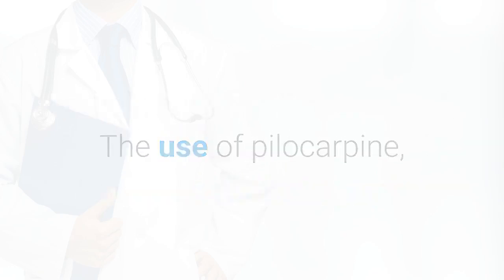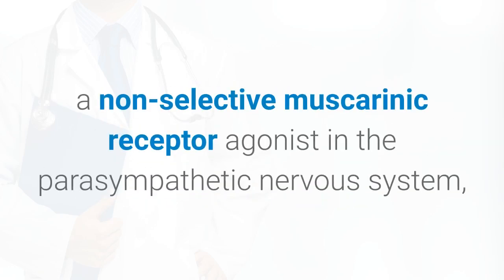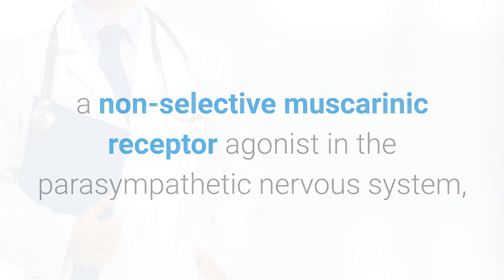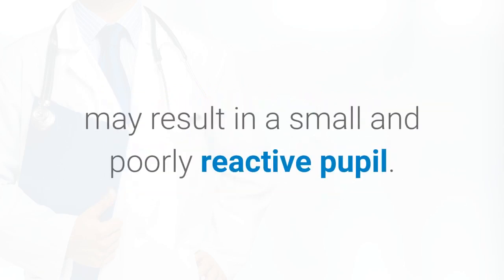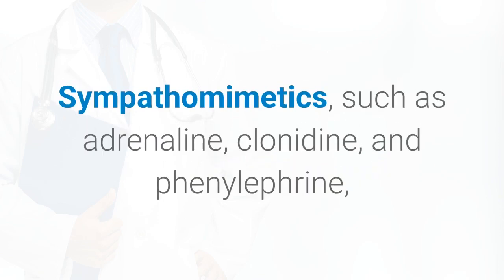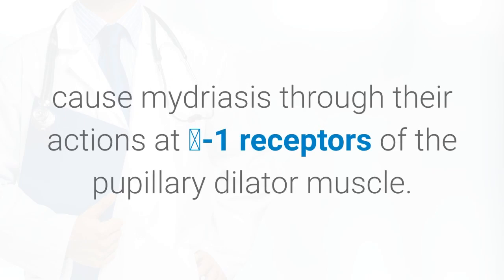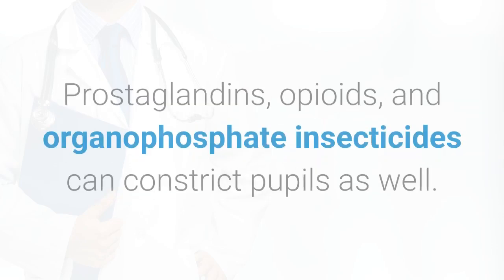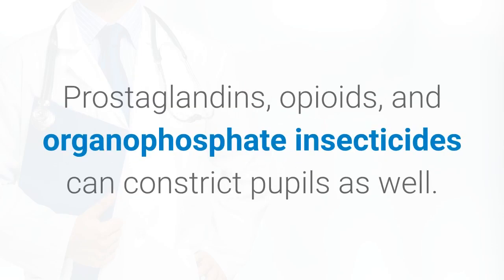The use of pilocarpine, a non-selective muscarinic receptor agonist in the parasympathetic nervous system, may result in a small and poorly reactive pupil. Some sympathomimetics such as adrenaline, clonidine, and phenylephrine cause mydriasis through their actions at alpha-1 receptors of the pupillary dilator muscle. Prostaglandins, opioids, and organophosphate insecticides can constrict pupils as well.